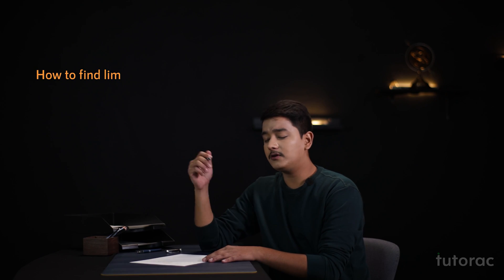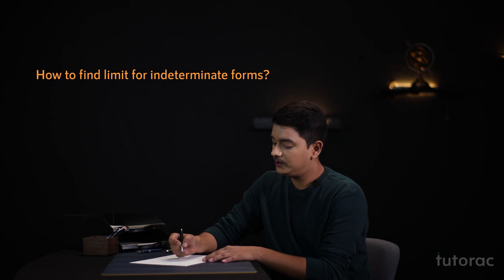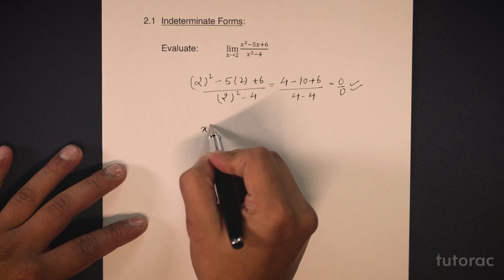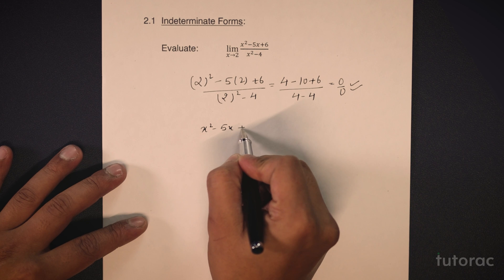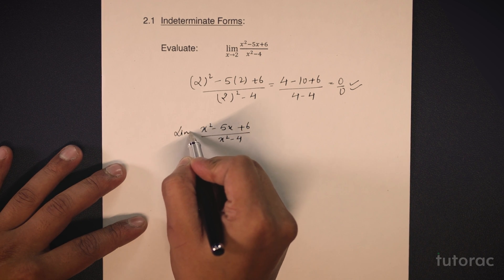How can I solve this limit? Let us see how. We have x square minus 5x plus 6 upon x square minus 4 and we have to find the value of this function at x tending to 2.